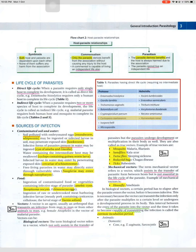Biological vectors are also called true vectors. Examples of true vectors: mosquito (malaria, filariasis), sandflies (kala-azar), tsetse flies (sleeping sickness), reduviid bugs (Chagas disease), ticks (babesiosis). Mechanical vectors assist in the transfer of parasitic forms between hosts but are not essential in the life cycle of the parasite — for example, housefly for amoebiasis. In biological vectors, a certain period must elapse after the parasite enters the vector before it becomes infective. This interval is called the extrinsic incubation period.